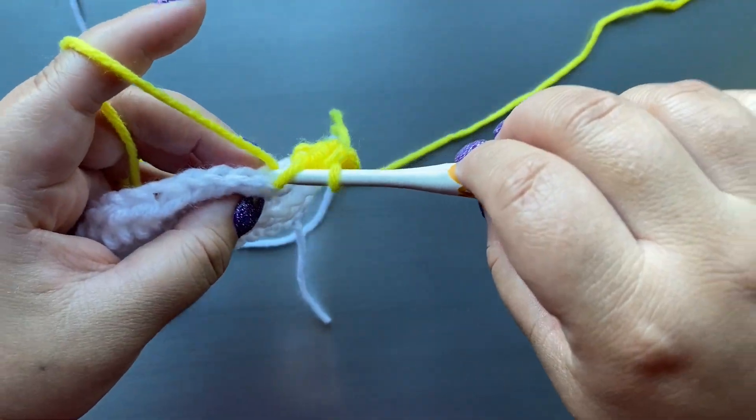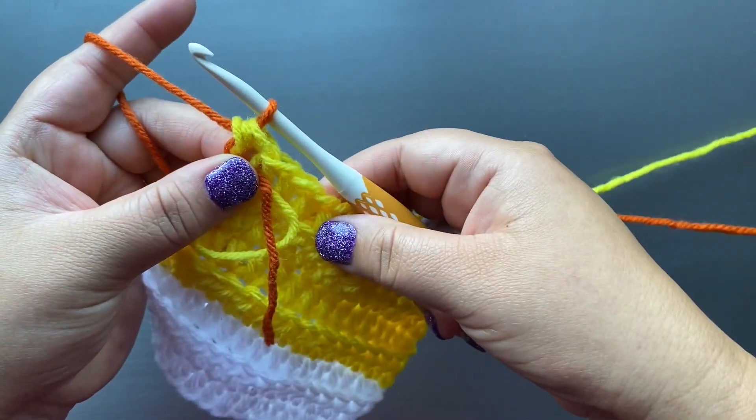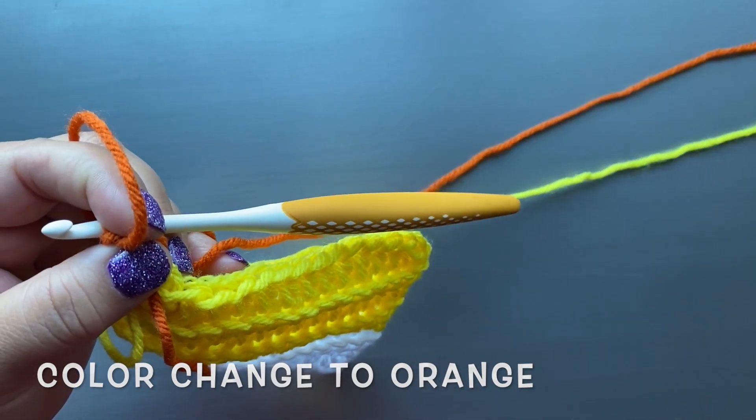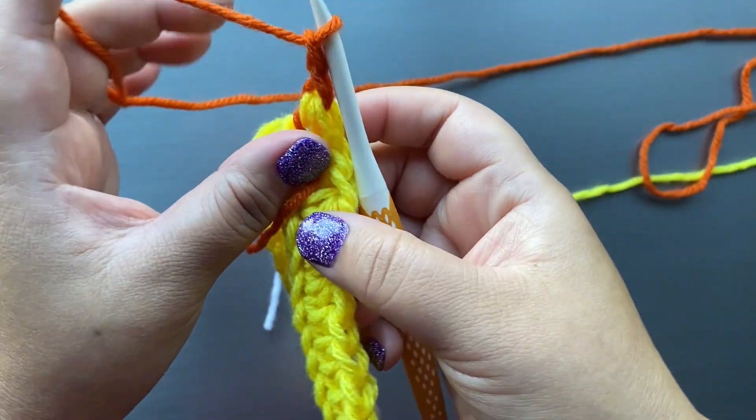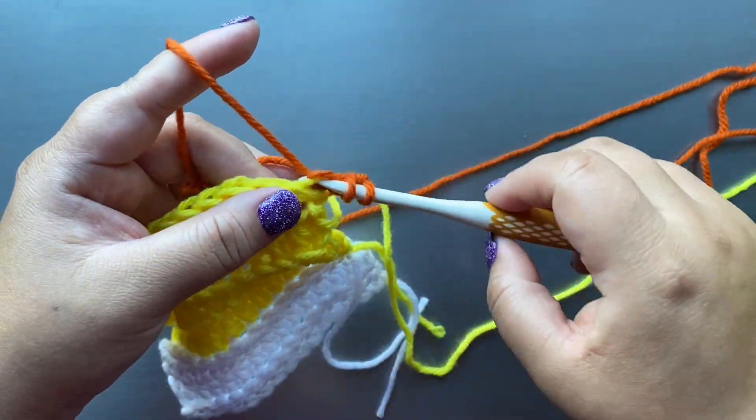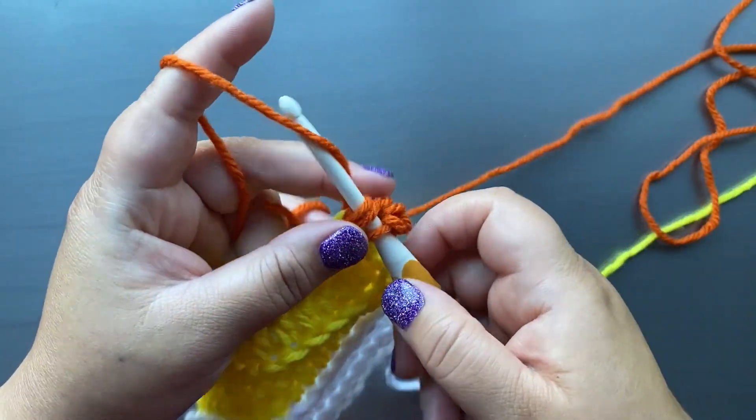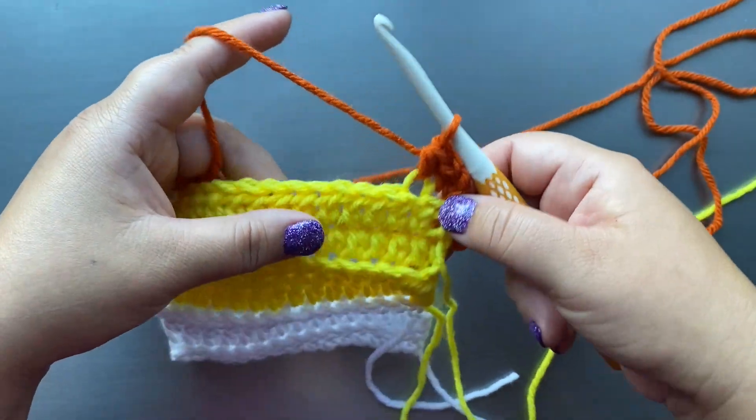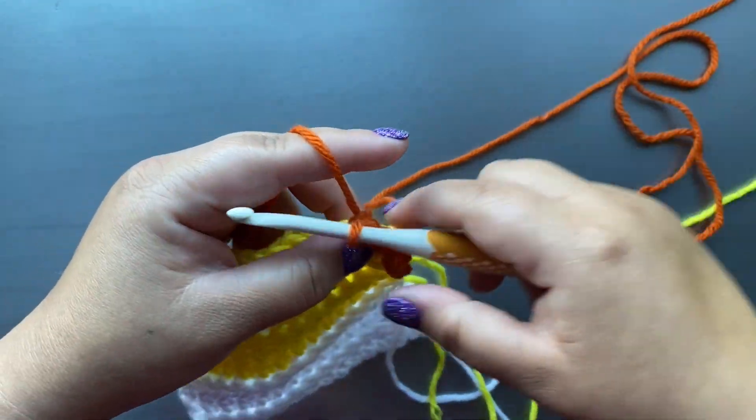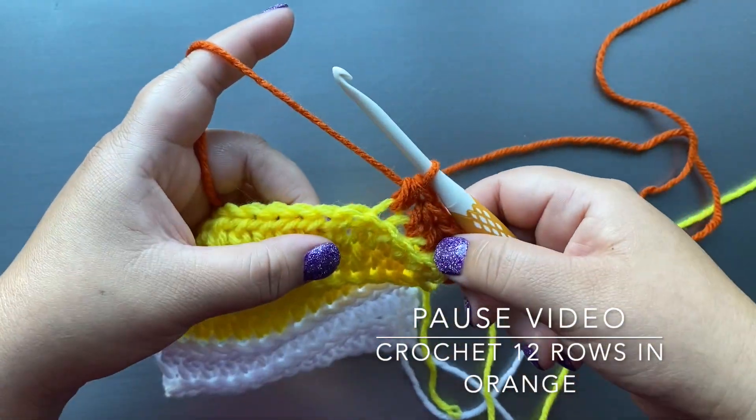Color change to orange at the end of your row seven. You are going to continue to crochet with the orange for a total of 12 rows. You will have a total of 19 rows for your headband. Three in white and four in yellow, 12 in orange. Go ahead and pause your video and meet me back here at the end of row 19.